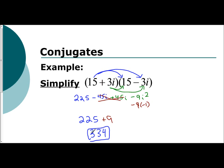What happened was we had this expression: 15 plus 3i times 15 minus 3i — complex numbers, real and imaginary parts. You multiply it by its conjugate and you get a real number. That's really cool. You multiply a complex number by its conjugate, and it becomes real.